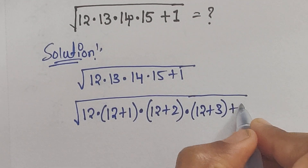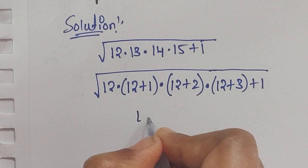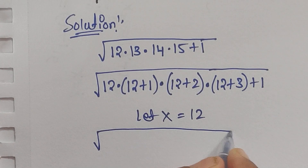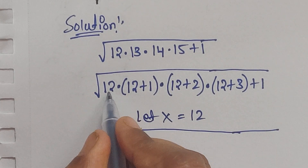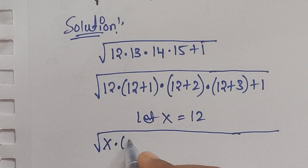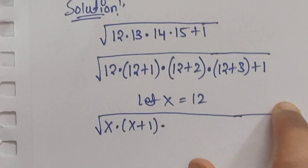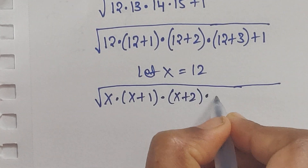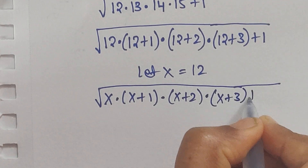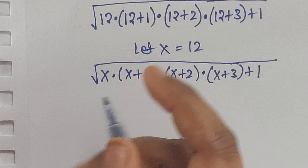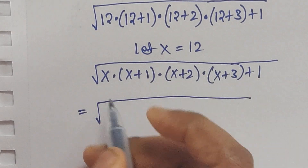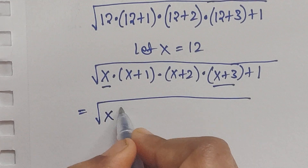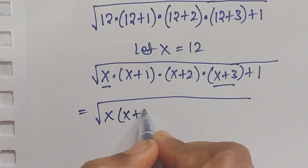Now let us consider x equal to 12. So we write: square root of x times (x plus 1) times (x plus 2) times (x plus 3) plus 1.